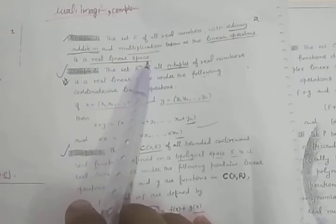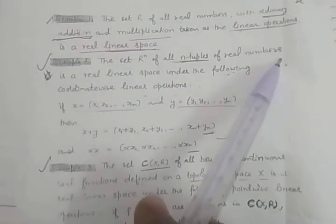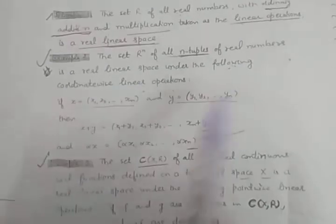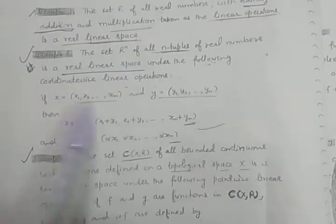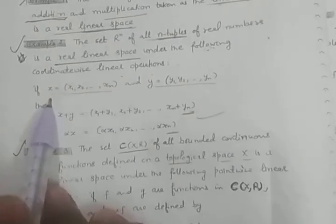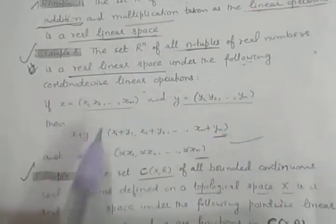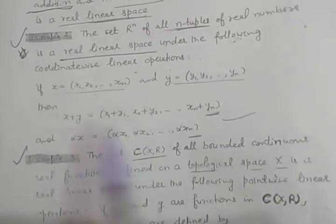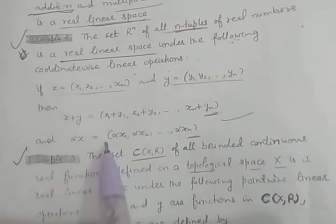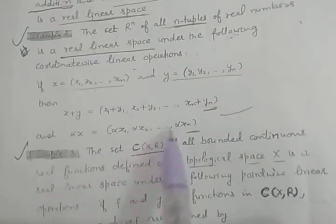Examples: First, the set R of real numbers with ordinary addition and multiplication as the linear operations is a real linear space. Second, the set R^n of n-tuples of real numbers is a real linear space, where if X = (x1, ..., xn) and Y = (y1, ..., yn), then X + Y = (x1+y1, x2+y2, ..., xn+yn) and alpha·X = (alpha·x1, alpha·x2, ..., alpha·xn).